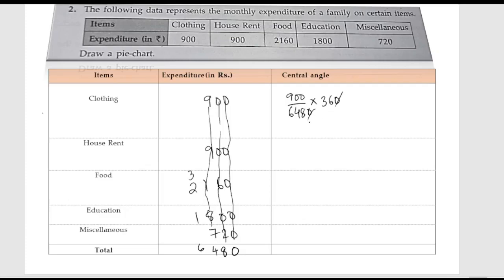For clothing, the expenditure is 900. So the central angle is 900 divided by 6480, multiplied by 360. After cancellation we get 50 degrees. So the central angle for clothing is 50 degrees.